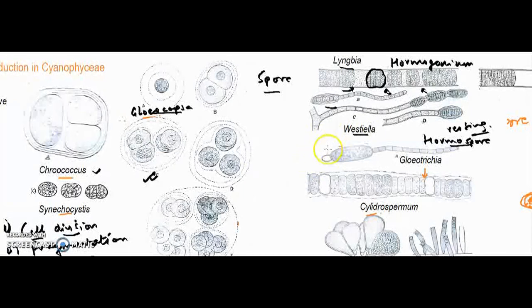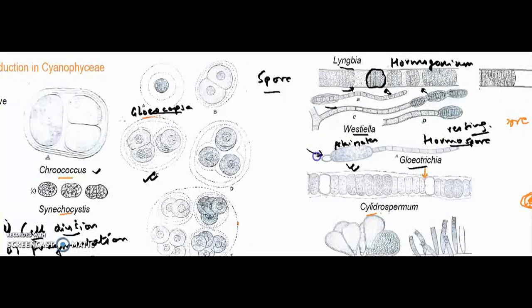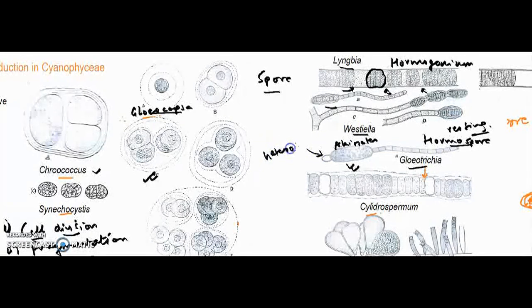The other reproductive structures are akinetes. In Gloeotrichia, akinetes are quite elongated structures with heterocysts presented at the terminus. Heterocysts are also supposed to be reproductive structures. Akinetes are vegetative cells differentiated into a large structure.